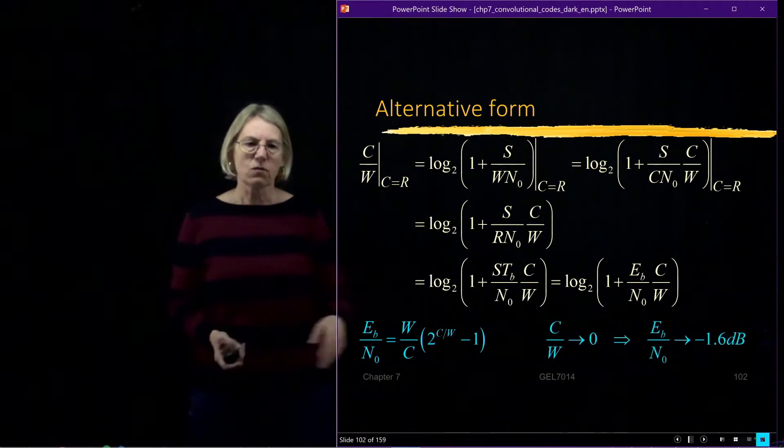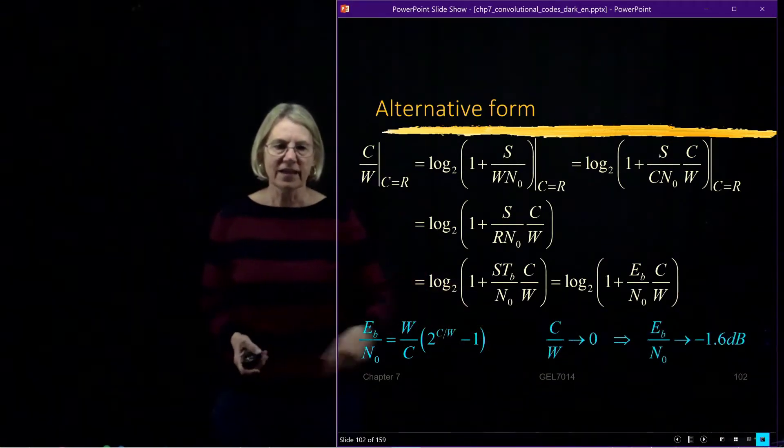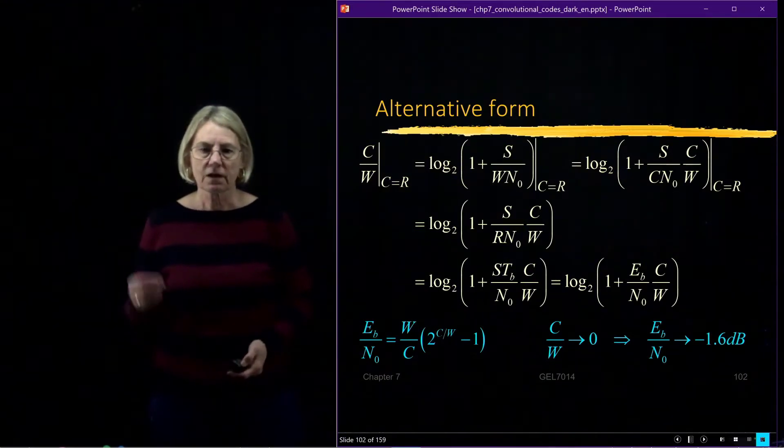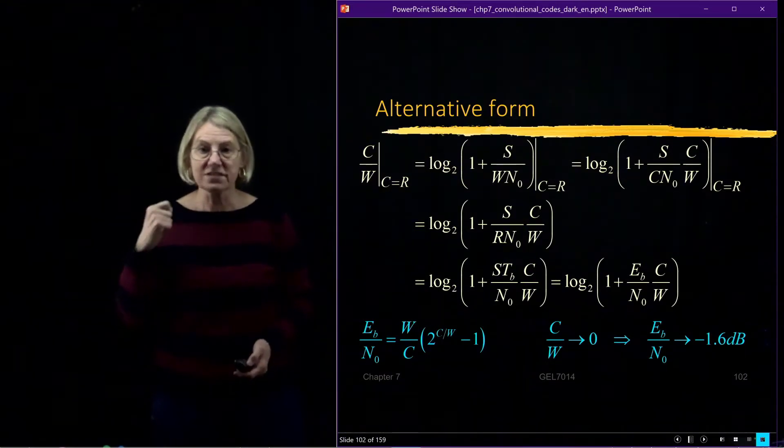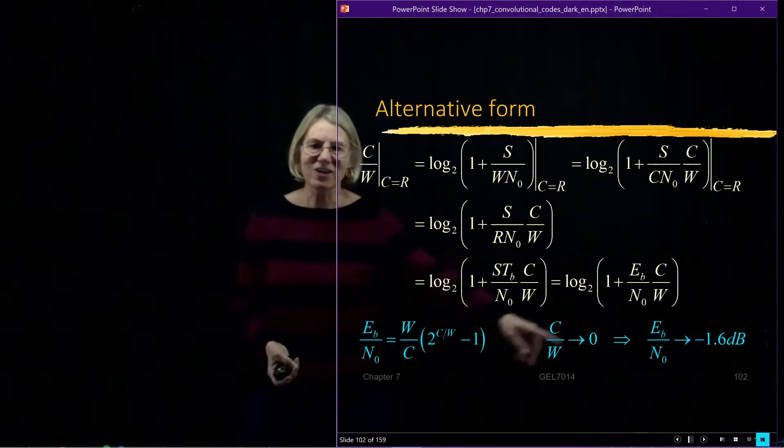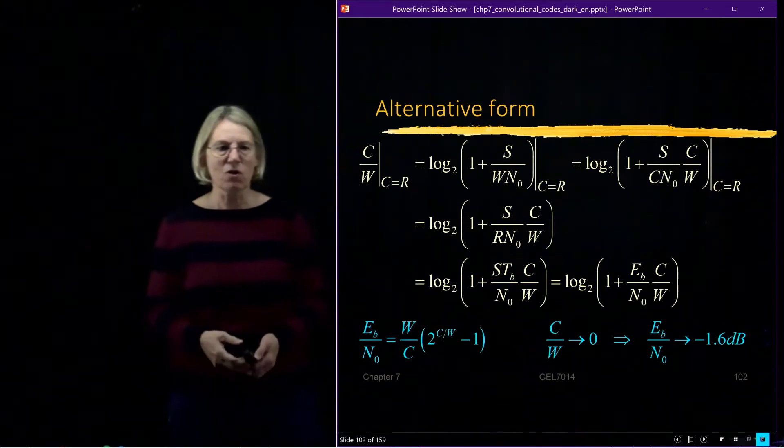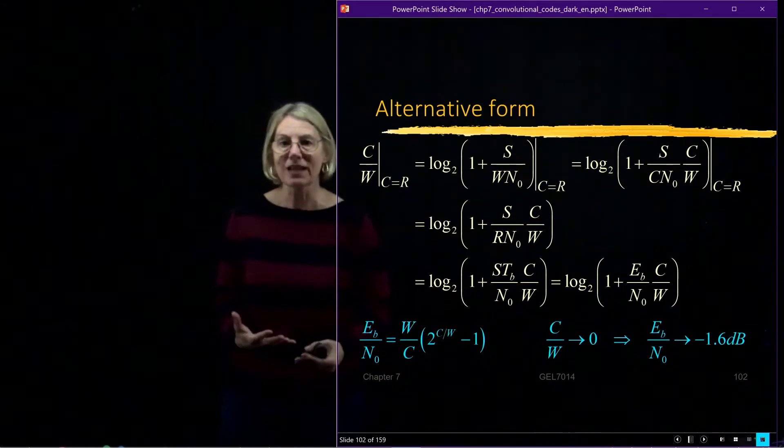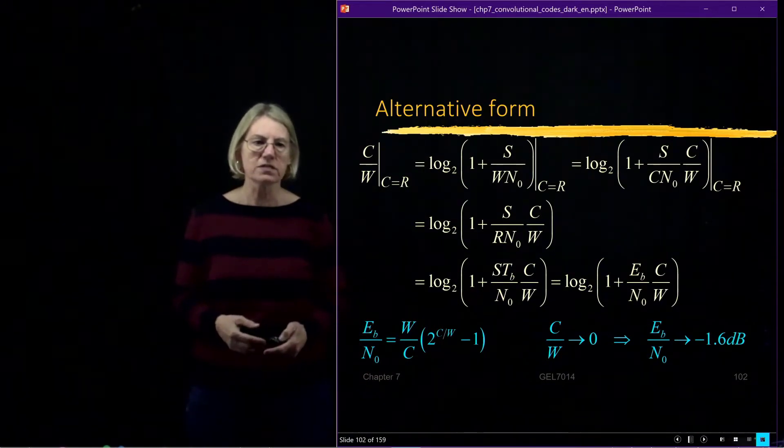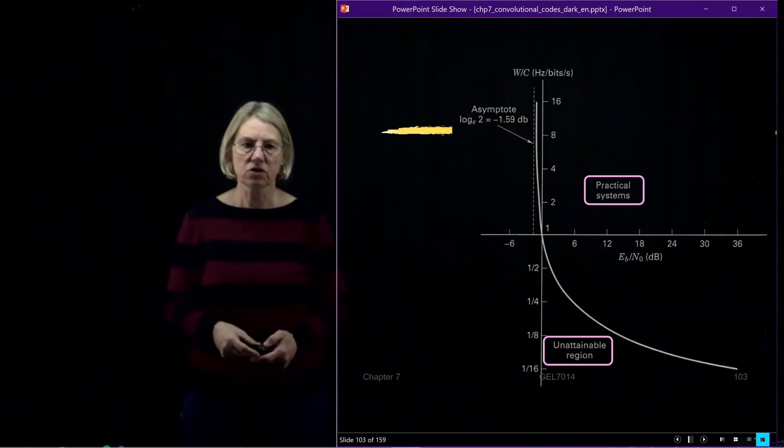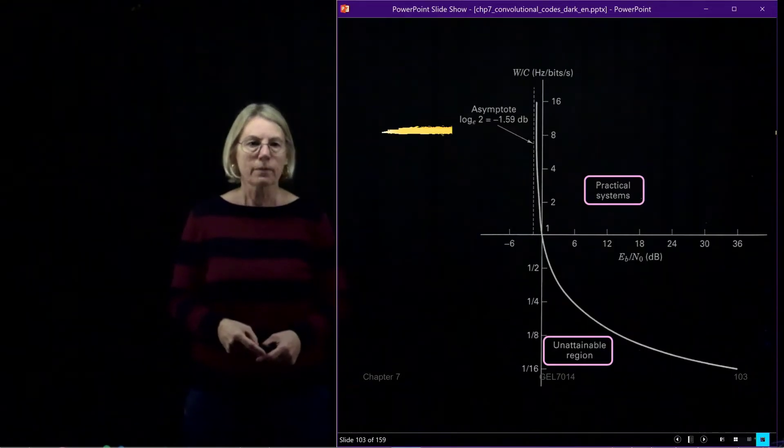We found that if we let our channel efficiency go to zero, so like a really, really bad efficiency, that we could get to an EB/N0 as low as minus 1.6 dB and still have reliable communication. It's kind of phenomenal that the noise can really clobber your signal and you could still get good performance.